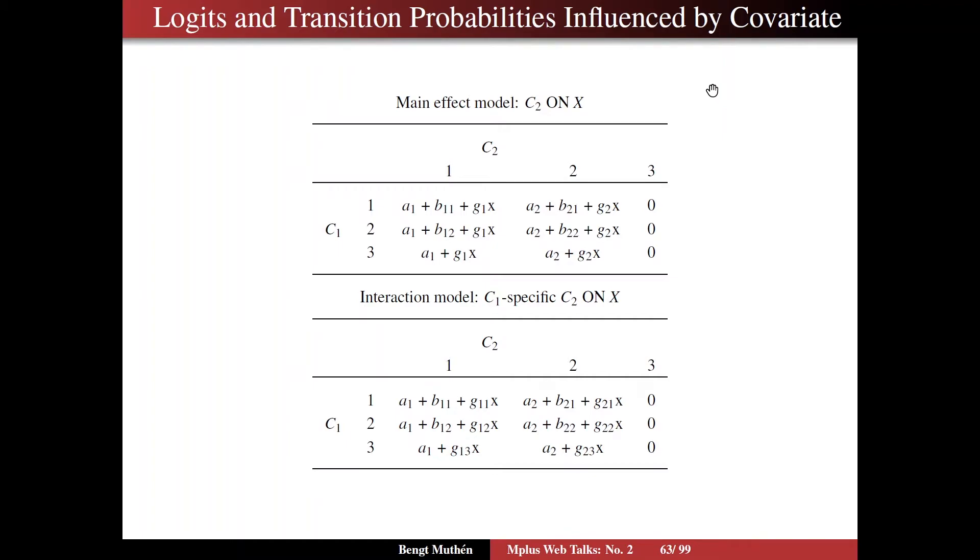Here's what it looks like in M-plus Logit formulation. Main effect model and interaction model, C1 and C2, and we have this Logit table that we show in the user's guide at the end of chapter 14. Here, with the addition of influence from X. In the main effect model, the influence of X on the C2 variable is the same irrespective of the starting class in both cases. The effect varies depending on the C2 class, class 1, g1, class 2, g2.